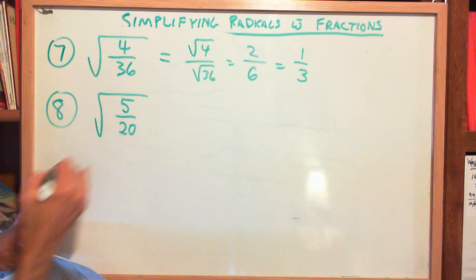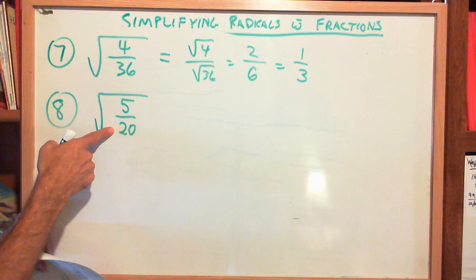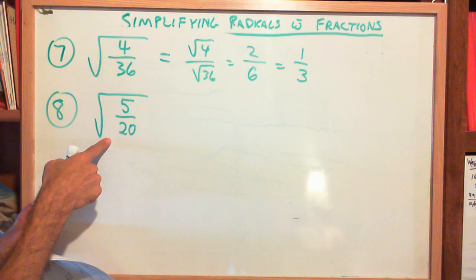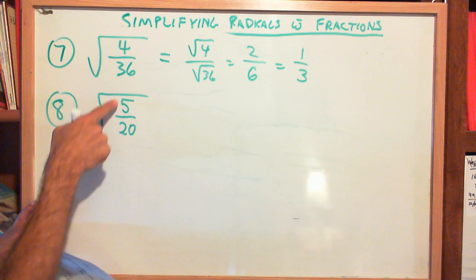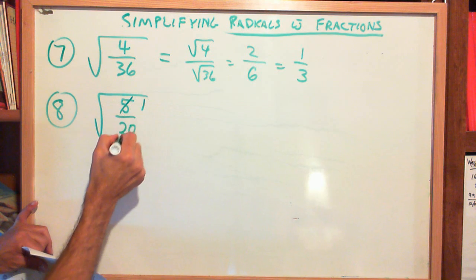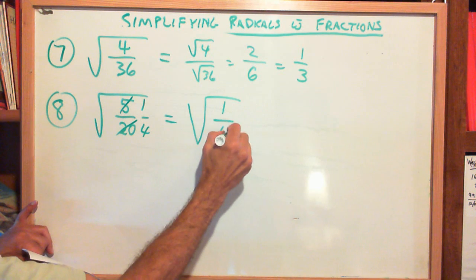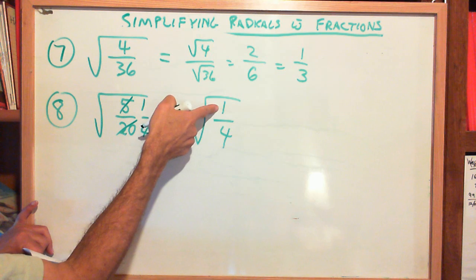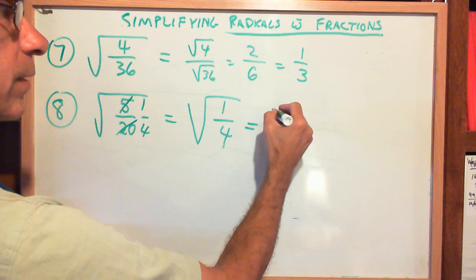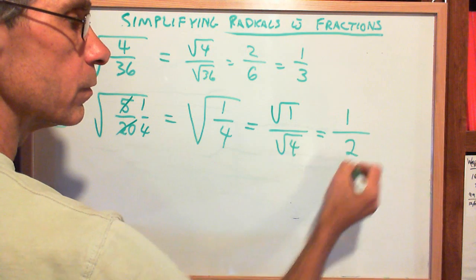Example 8: 5 square root of 5 twentieths — the square root of 5 over 20. Is 5 a perfect square? No. Is 20 a perfect square? No. When neither is a perfect square, before separating I ask: can I simplify this fraction? 5 goes into both: 5 over 20 reduces to 1 fourth. Now is 1 a perfect square? Yes. Is 4 a perfect square? Yes. So I separate: square root of 1 over square root of 4 equals 1 over 2. Answer: 1 half.